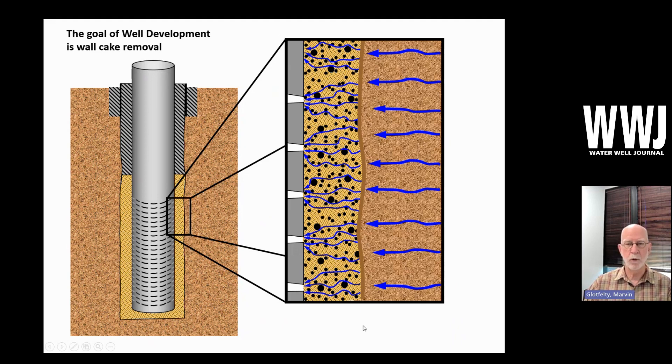Now wall cake is good while we're drilling the well because it stabilizes the borehole, but it's a problem when we're producing water. So we want to remove that so we can get the full amount of groundwater that we're pumping and have an efficient well.